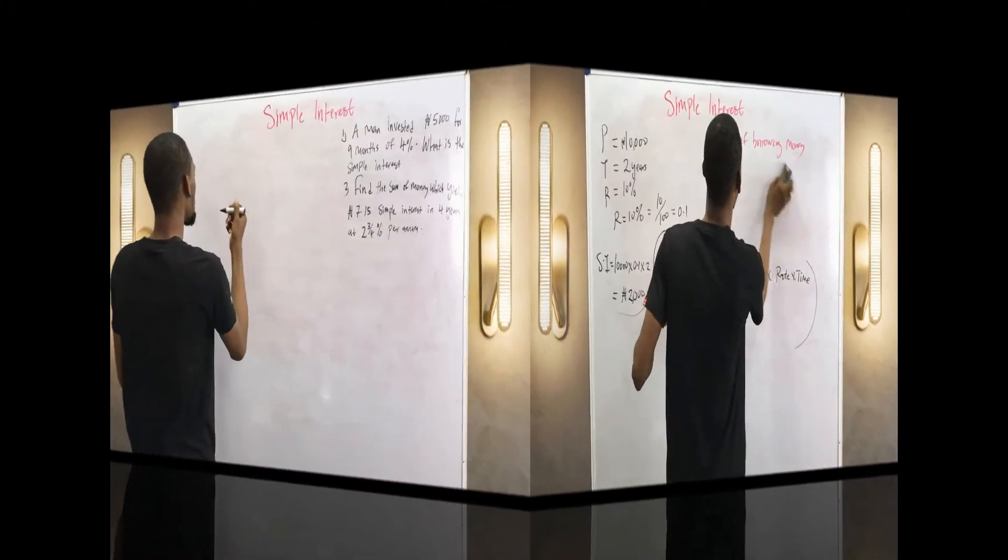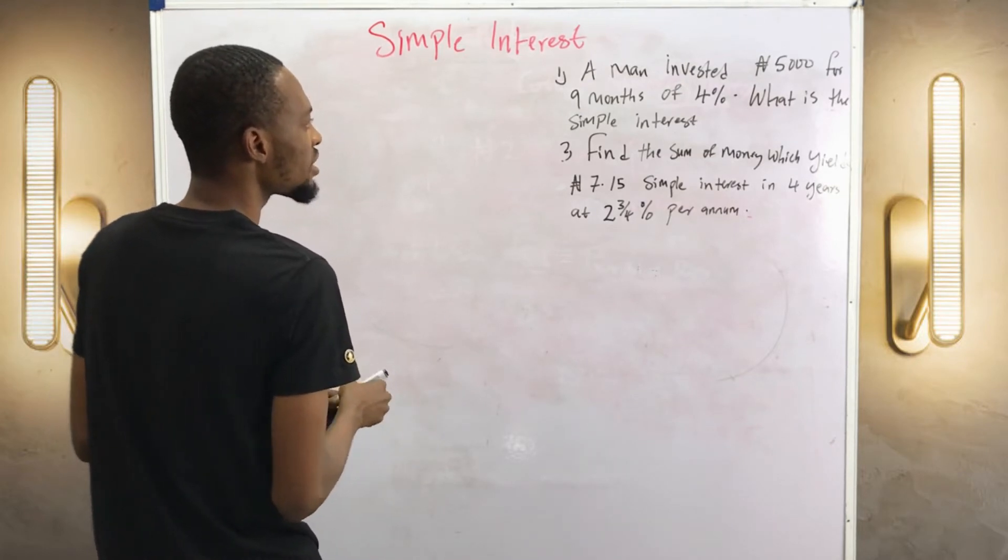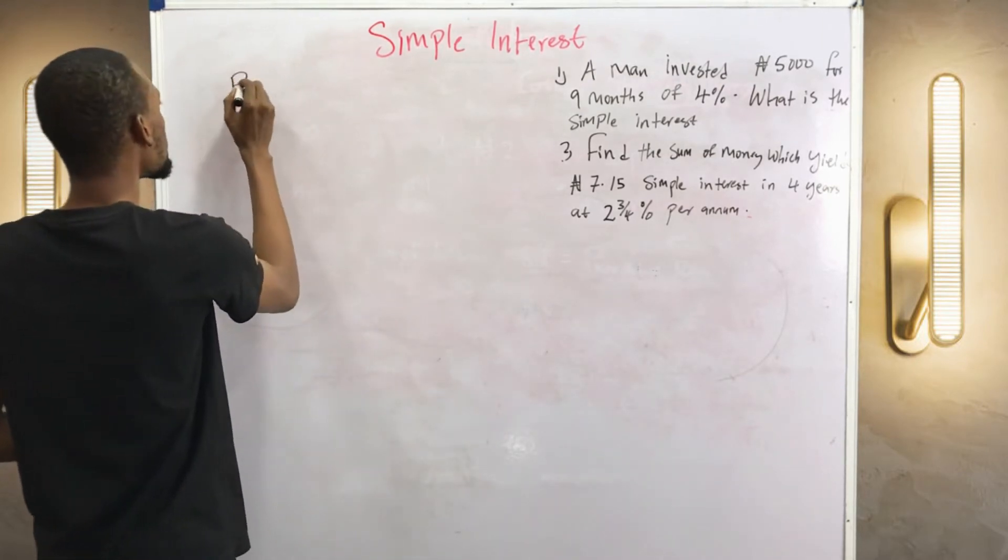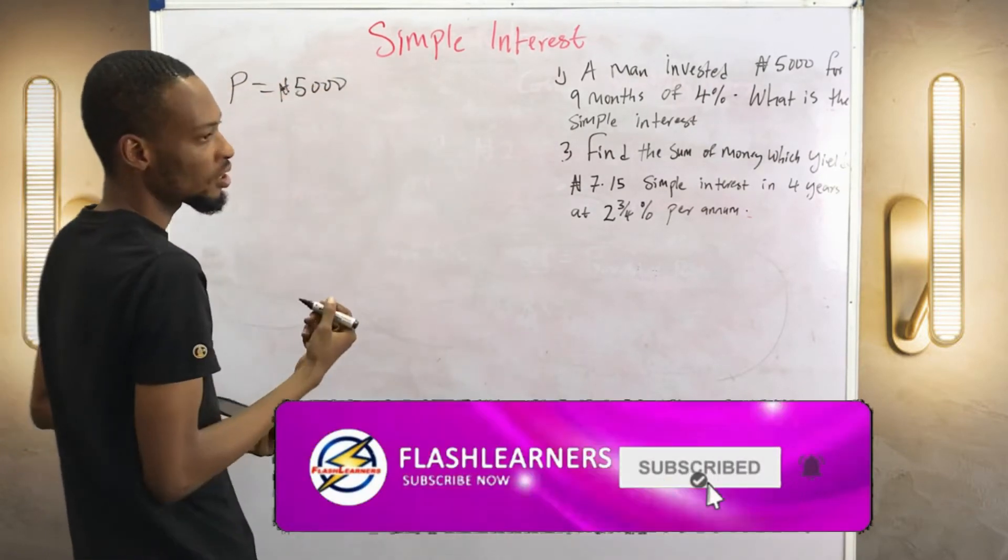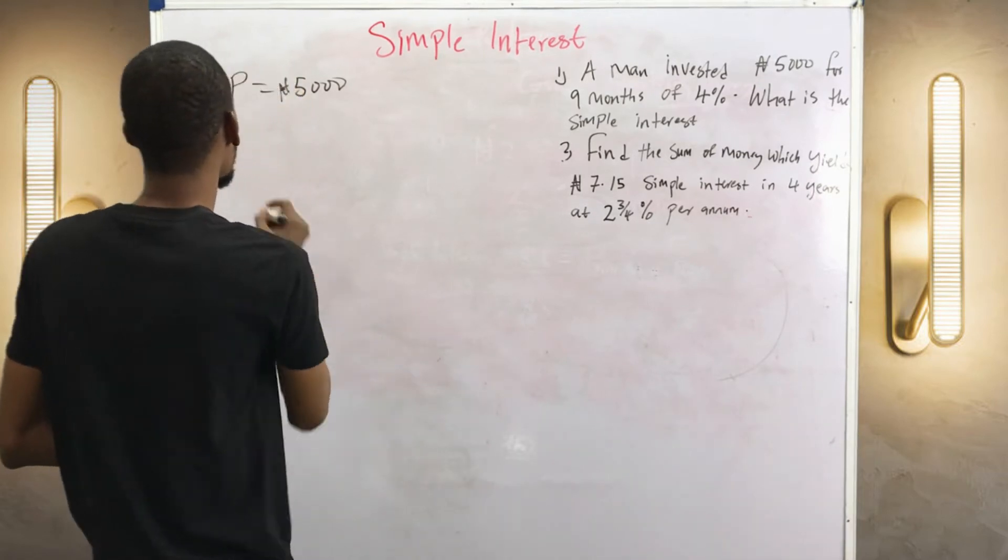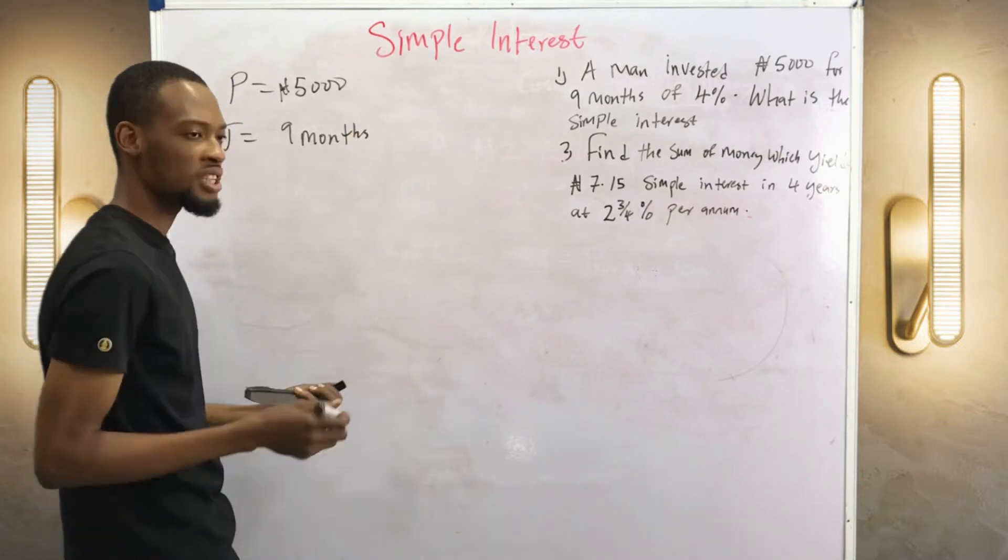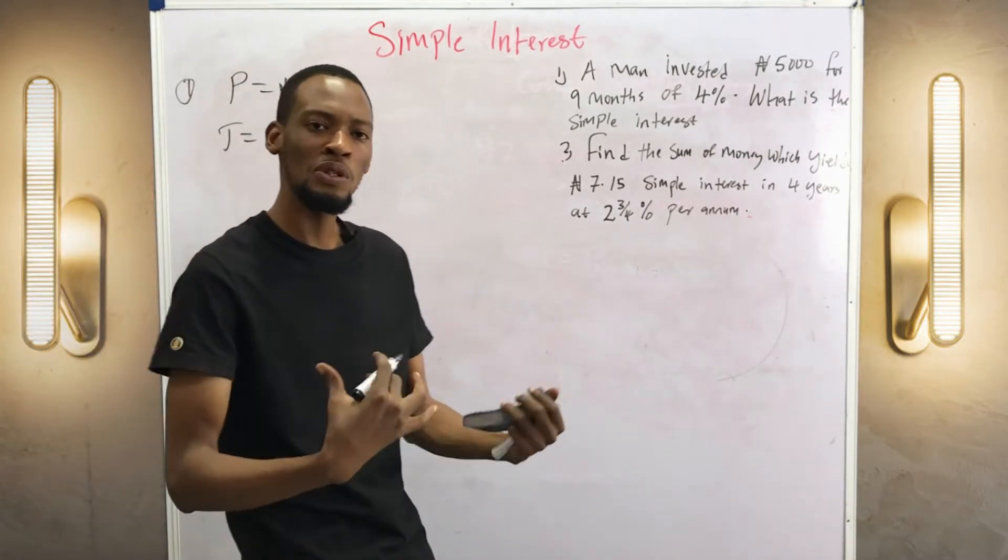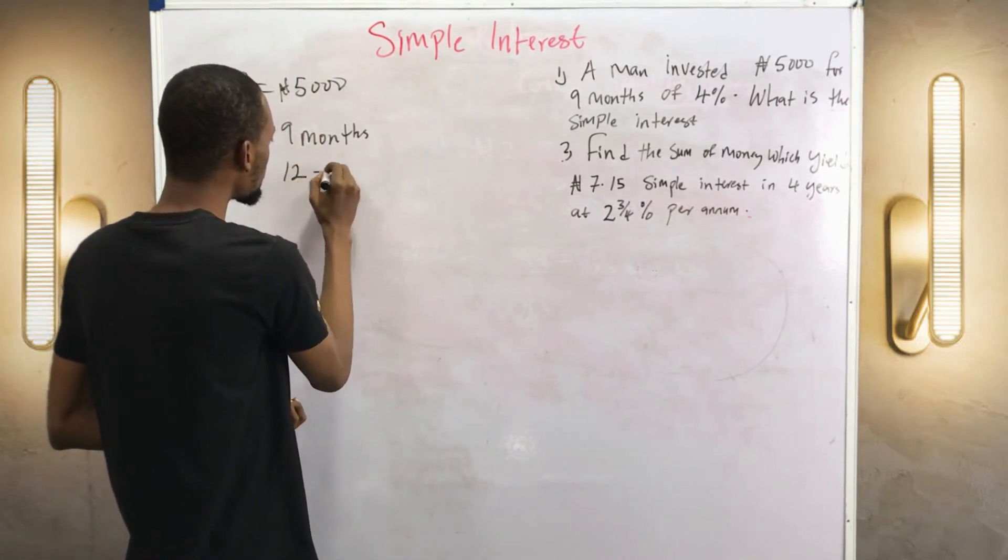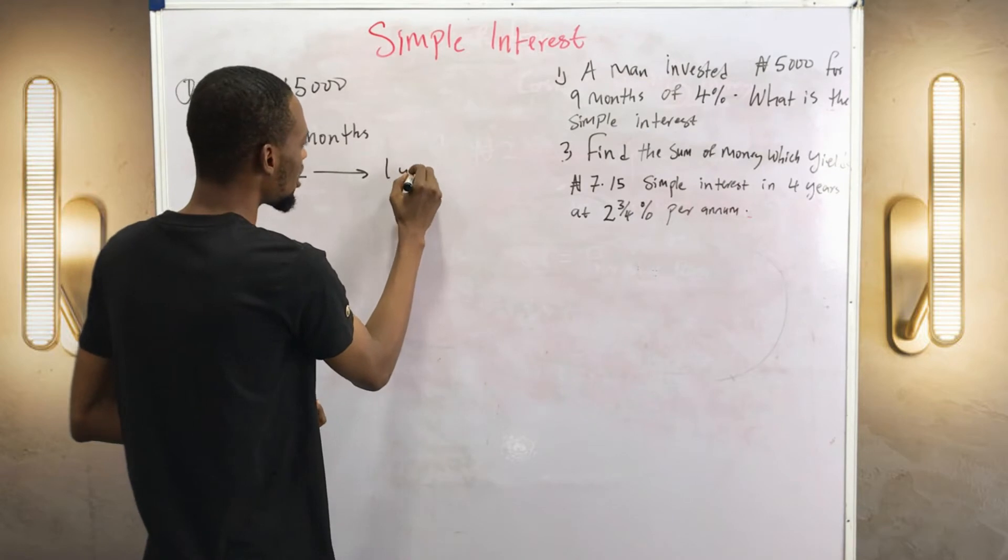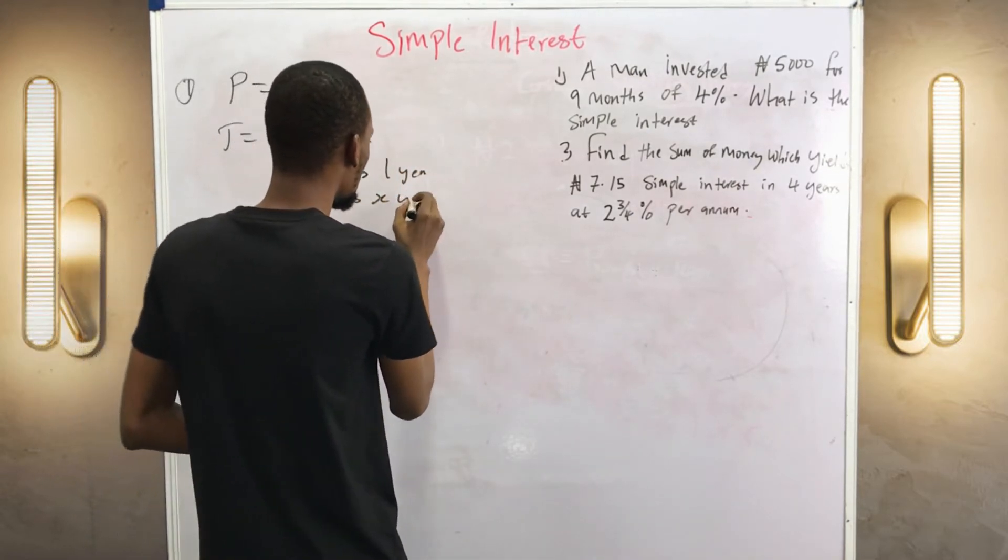From the first question we know that a man invested 5,000, that is the investment, that's the principal. So P equals 5,000 for nine months. So time equals nine months. In simple interest we compare any time given to years. We work with years and not with months. So if 12 months is one year, then nine months, let's say nine months is X. Cross multiplying.